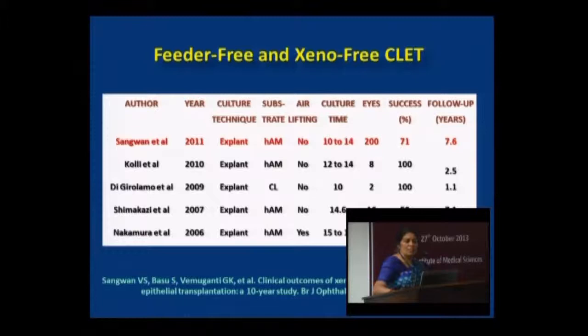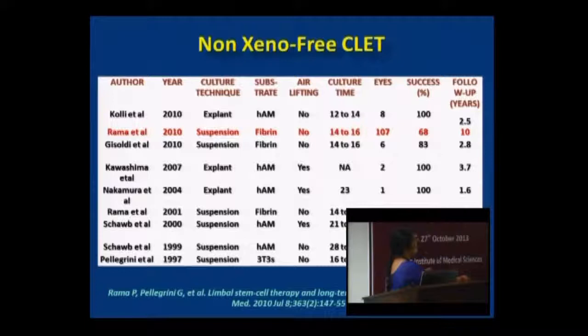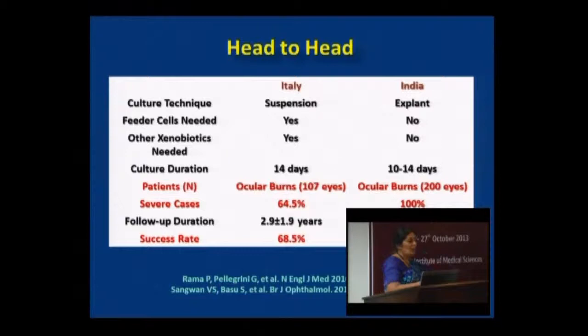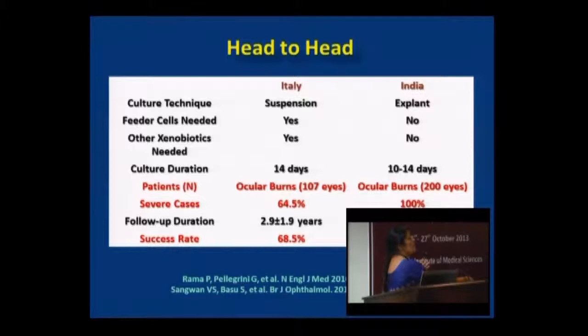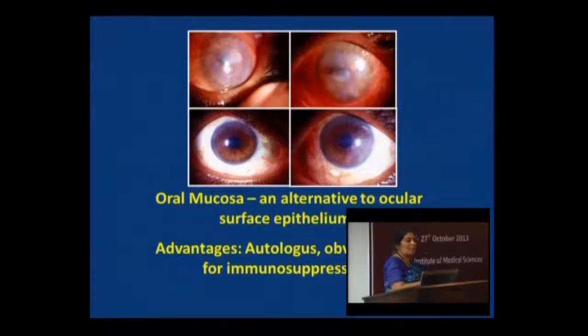Our technique was unique in that it was feeder cell-free and xeno-free. We published the longest follow-up of 10-year survival, with a mean of 7.6 years in the first 100 cases. The comparative data shows success between groups. The first published series in the world was from Italy — they used the suspension technique with feeder cells and xenografts; we used the explant technique without feeder cells or xenobiotics. The culture duration was the same, and irrespective of method, success was comparable. These are the largest series in the world to date.